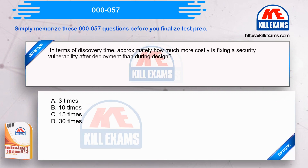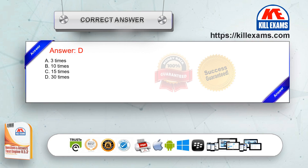In terms of discovery time, approximately how much more costly is fixing a security vulnerability after deployment than during design? Option A: three times. Option B: 10 times. Option C: 15 times. Option D: 30 times. The correct answer is Option D.